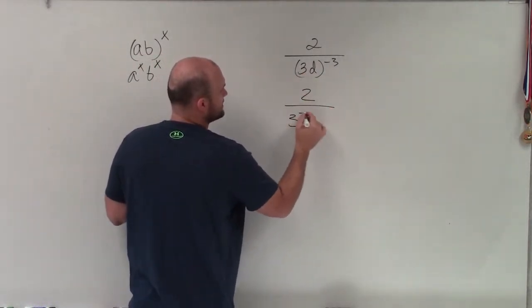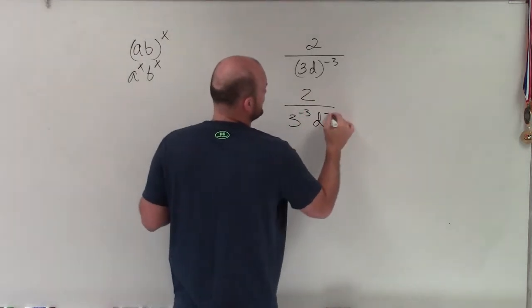So therefore, I have 2 over 3 to the negative third times d to the negative third.